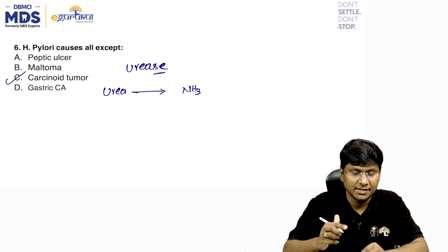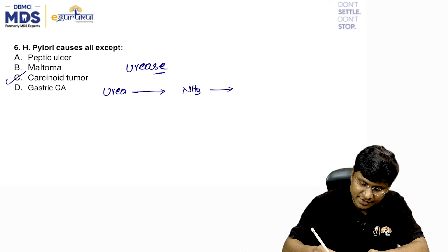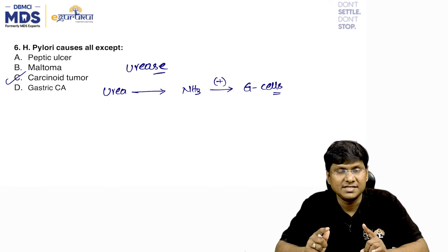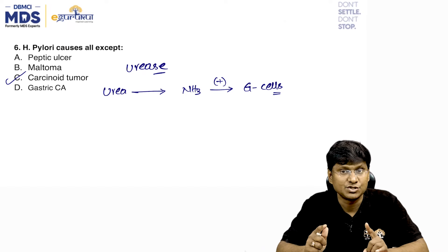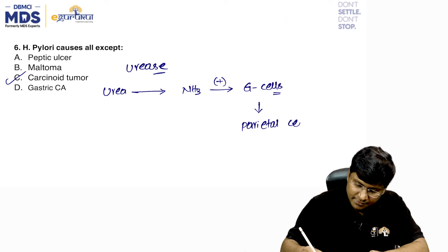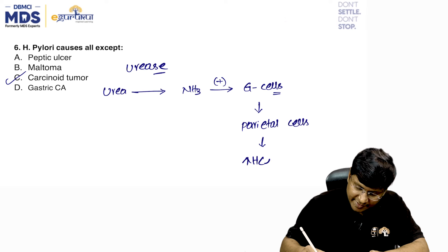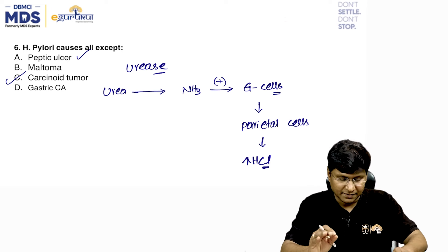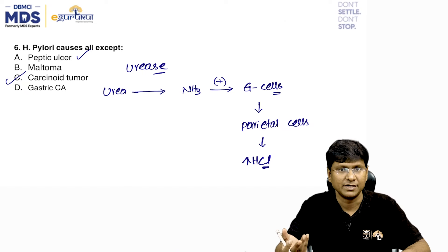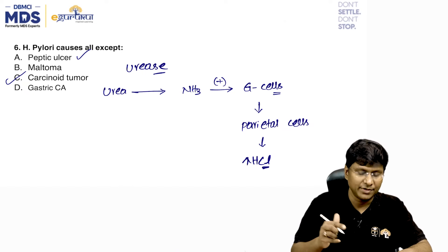The ammonia stimulates the G cells of the stomach, which in turn stimulate the parietal cells, resulting in excessive production of HCl. This is responsible for the development of peptic ulcer, which can progress to gastric carcinoma.